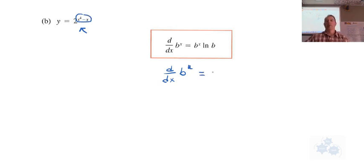We would do everything the same: b to the u, ln b. But then what else do we have to do if we have u instead of just x?